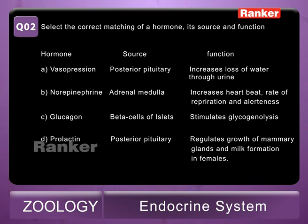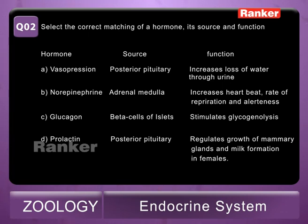Option C — glucagon, beta cells of islets, stimulates glycogenolysis. In pancreatic islets of Langerhans, alpha cells synthesize glucagon, beta cells synthesize insulin, and delta cells synthesize somatostatin. So glucagon secreted by beta cells is wrong — beta cells produce insulin, not glucagon. Option D — prolactin, posterior pituitary, regulates growth of mammary glands and milk formation. The functions are correct, but prolactin is secreted by anterior pituitary, not posterior pituitary. So D is also wrong.